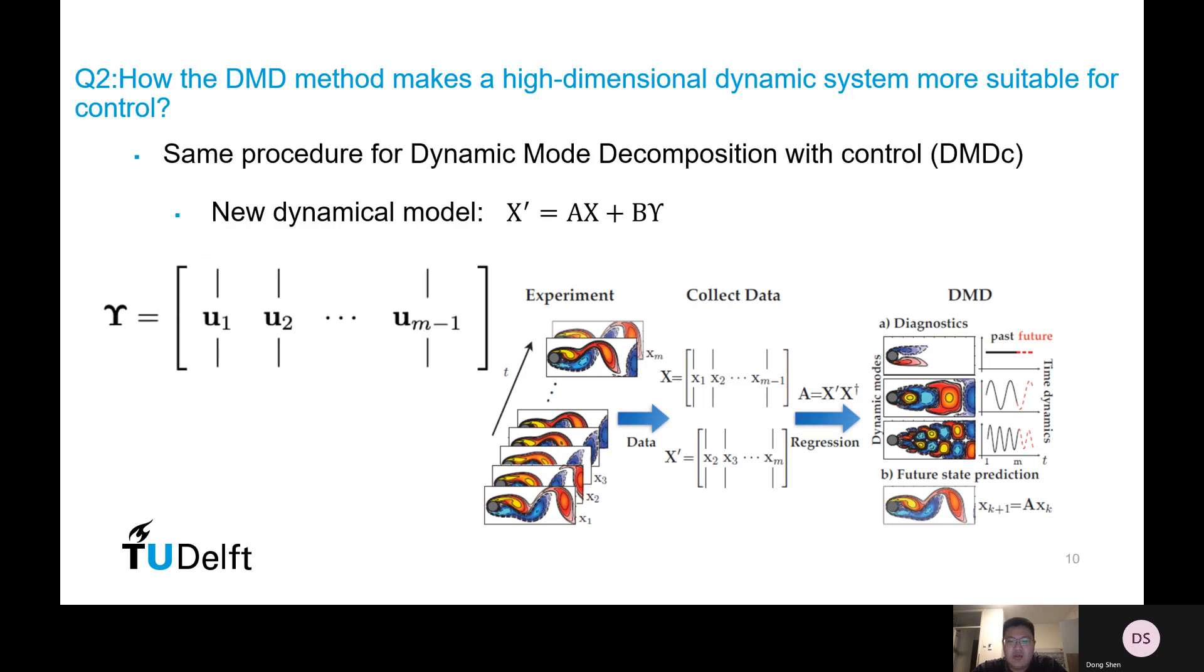The second way to solve this question is called dynamic mode decomposition with control, also known as DMDC. As you may notice, all DMD methods we mentioned before are actually about autonomous systems, which means that it doesn't have any control inputs. But since we want to control the system, it would certainly be better if we can also have control inputs under consideration.